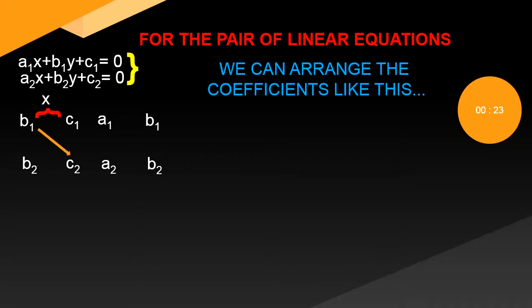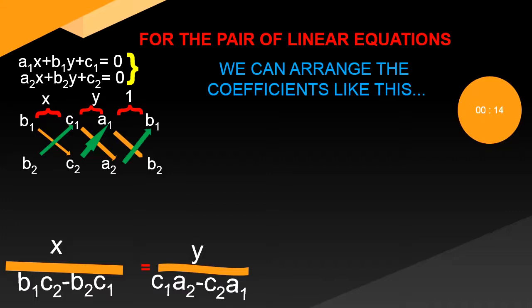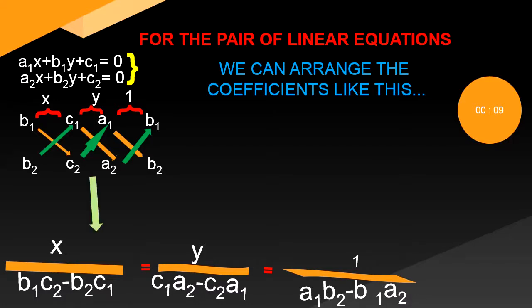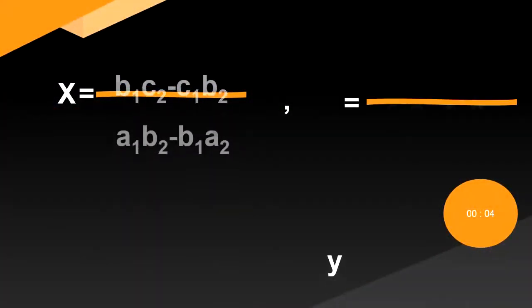Now to get the value of x and y, we can multiply the coefficients as shown in the arrow mark. Thus, we can have the value of x and y.